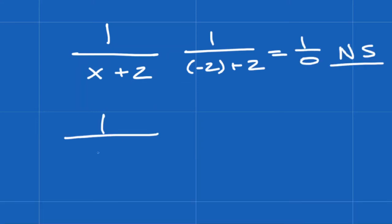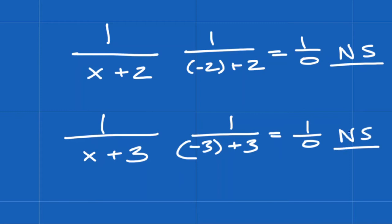Well, if x equaled either of those numbers, we would end up with a zero in the denominator and that's gonna be no solution automatically. So that's a no-no.